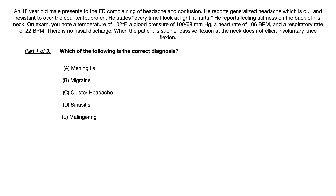This is technically three different questions. Which of the following is the correct diagnosis? A. Meningitis, B. Migraine, C. Cluster headache, D. Sinusitis, or E. Malingering. The diagnosis here is meningitis. The patient complains of headache and confusion. Every time he looks at light, it hurts — that's photophobia. There's stiffness on the posterior aspect of his neck, and he has a significant fever of 102. So the answer is meningitis.